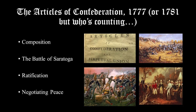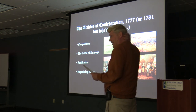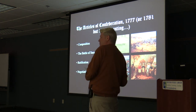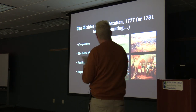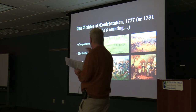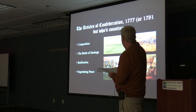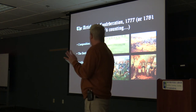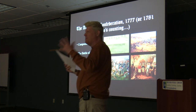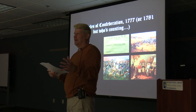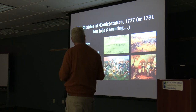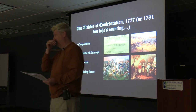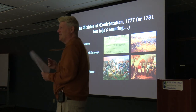Once the Revolution breaks out, it becomes pretty quickly evident that there needs to be a more coherent structure than just the Continental Congress. The Second Continental Congress assigns a committee of twelve notables from various states to put together what becomes the Articles of Confederation and Perpetual Union. Basically, the Articles are a sort of agreement among separate sovereign entities. There is no United States of America at that point. They start talking about this in 1776, right around the beginning of the conflict.